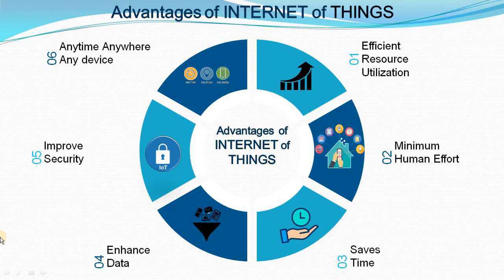Let us have a look at advantages of IoT. The first advantage is efficient resource utilization. Efficient resource utilization means if we know the functionality and the way how each device works, we can definitely increase resource utilization as well as monitor natural resources. So if devices are going to work in a particular pattern,